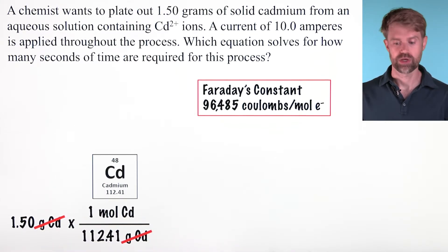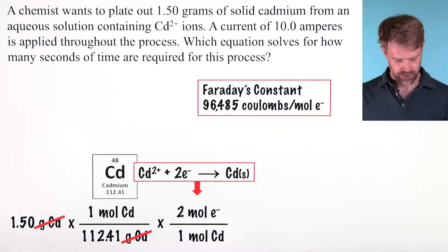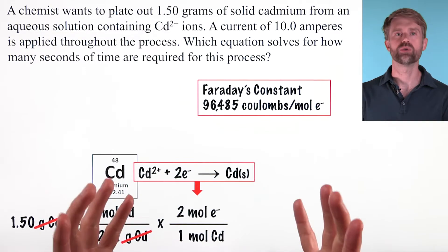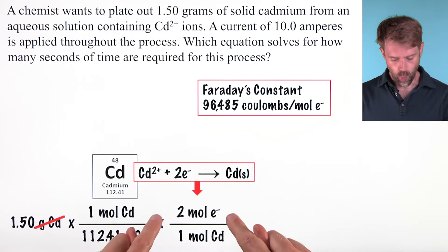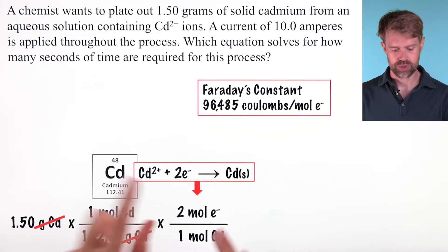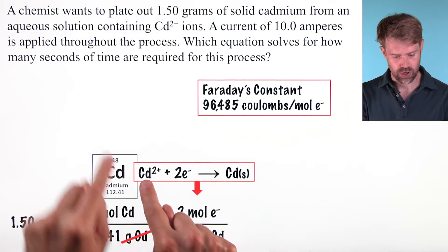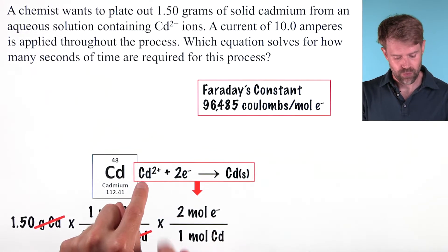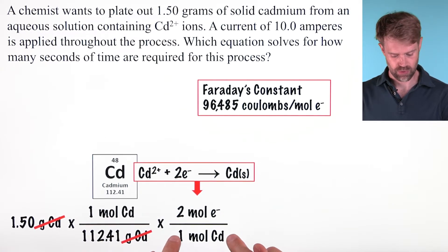That's going to leave us with moles of cadmium. The next thing we want to do is use a conversion factor that converts moles of cadmium to moles of electrons. This is a really important step. Reducing one mole of cadmium requires two moles of electrons. We know this because the cation has a 2+ charge, Cd²⁺. So for each mole of Cd²⁺ it takes two moles of electrons. We arrange this conversion factor so that moles of cadmium cancels.